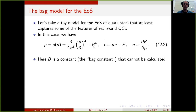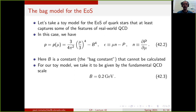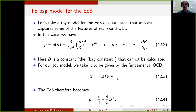The bag constant is a model parameter — it cannot be calculated from first principles and must be put in by hand. One can nevertheless make an educated guess: we want to describe nuclear matter, which is governed by QCD, and QCD has a fundamental scale on the order of about 200 MeV. So B can be taken to be about 0.2 GeV. This completes the equation of state, and plugging these in and performing the manipulation to get the energy density gives the bag model equation of state.